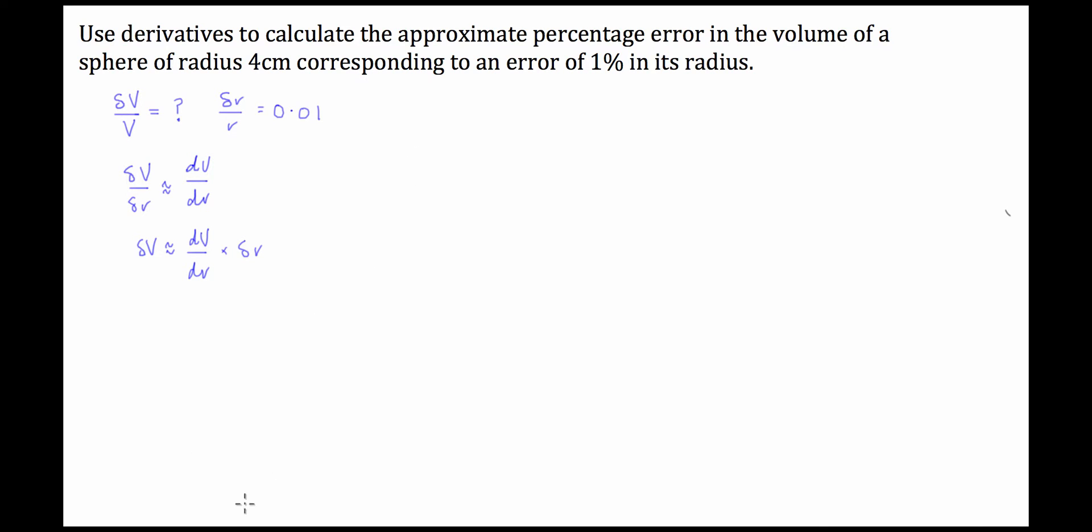So what we've been given is we need to, we know that the volume of a sphere, well hopefully you know this, is equal to 4 over 3 pi r cubed, and the derivative of volume with respect to radius, or dv dr, is equal to 4 pi r squared.